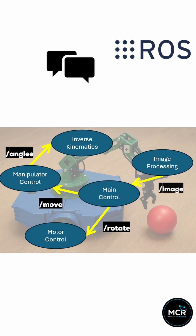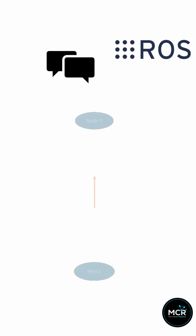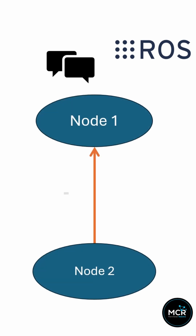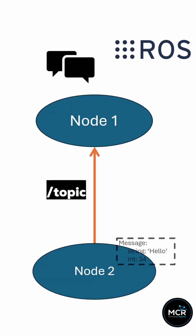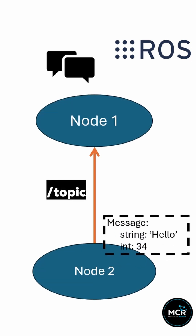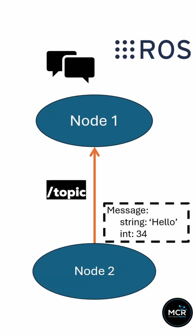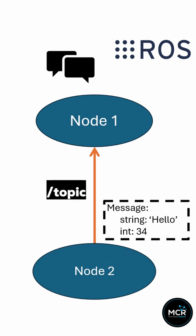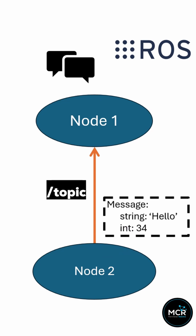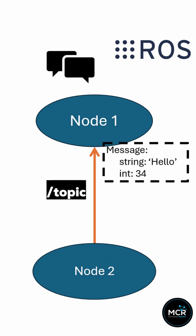Simple, right? And what about the messages? They have a specific format so everyone understands, like sending plain text or even memes. Publishers and subscribers must send and receive the same type of message to communicate. This makes sure all the robot's parts are speaking the same language.